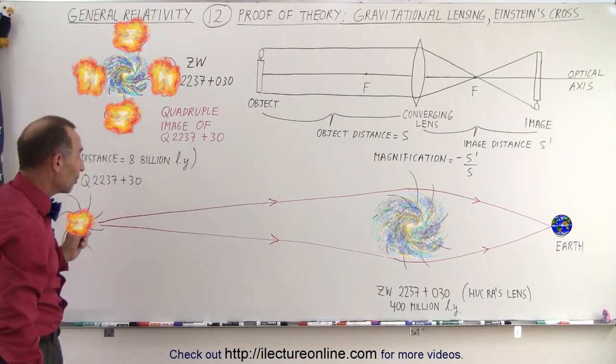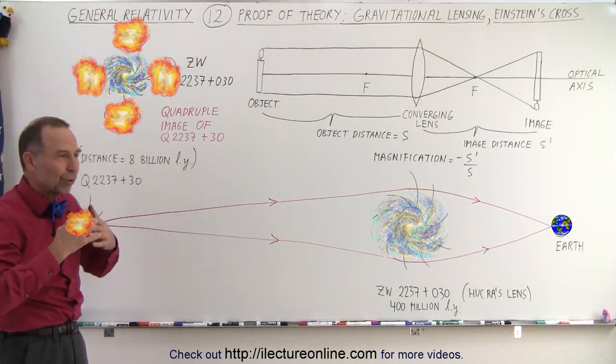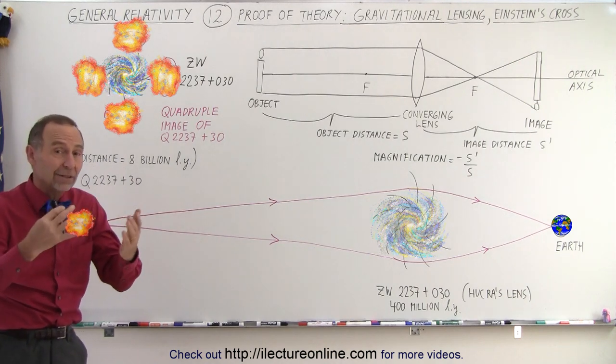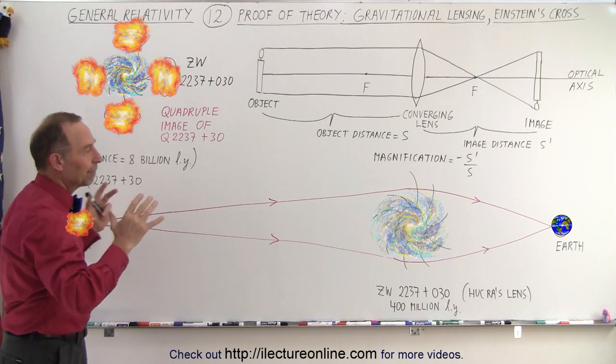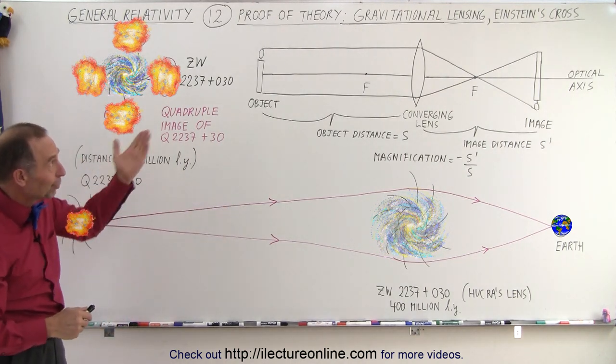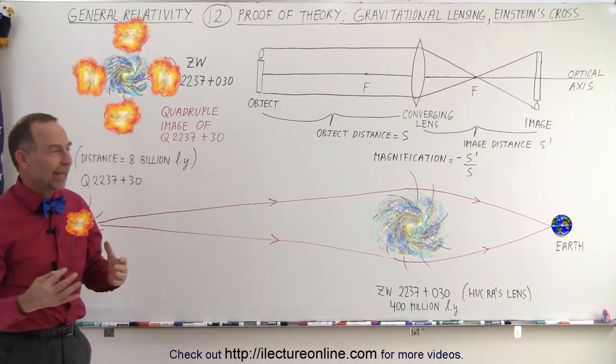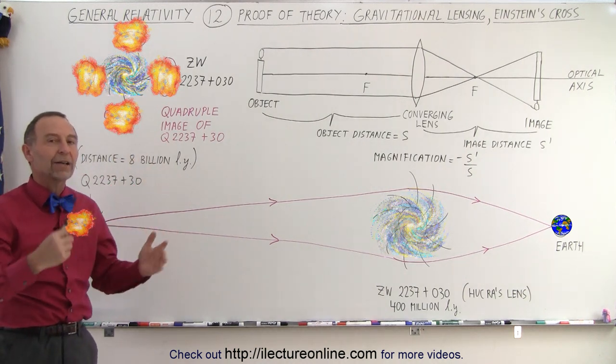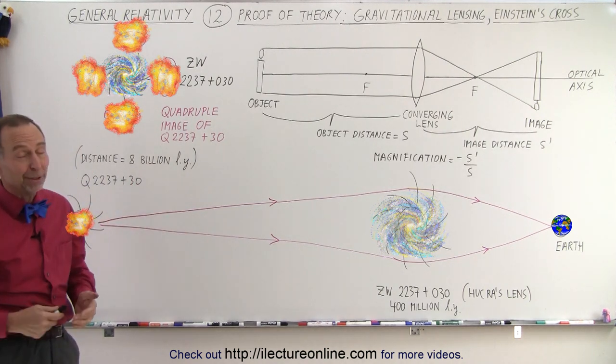And actually, we use this principle in more than one location. There's other places too, where we're able to look at a galaxy much clearer because of the magnification and the lensing that occurs when the light bends around a much closer galaxy. And that is how it's done and proves again that the theory of general relativity is real and can be shown to be real in all kinds of ways, including gravitational lensing.